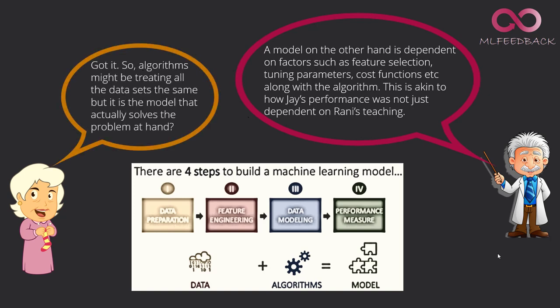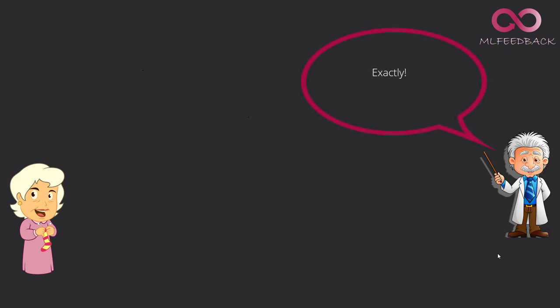Granny says, Got it. So, algorithms might be treating all the data sets the same, but it is a model that solves the problem at hand. Albert says, Exactly. It is always the model that is the solution to a business problem. Algorithm is just one of the several components that constitute a model.